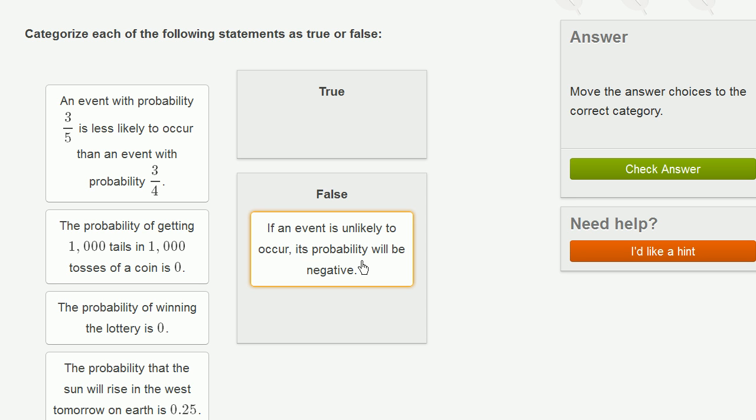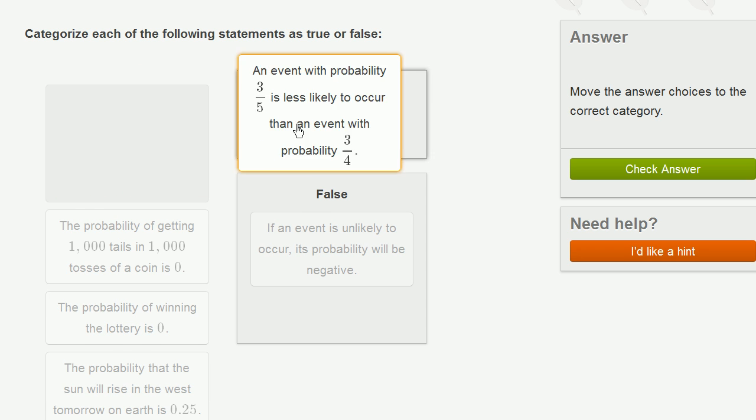An event with probability 3 fifths is less likely to occur than an event with probability 3 fourths. So 3 fifths is a smaller number than 3 fourths. We have the same numerator, we have a larger denominator. 3 is a smaller fraction of 5 than it is of 4. 3 fifths is 0.6, while 3 fourths is 0.75. So this is less likely to occur. This is true.